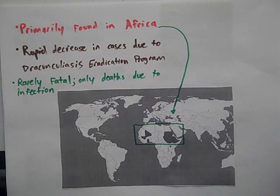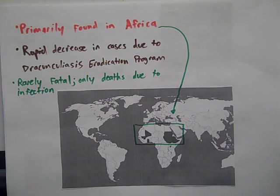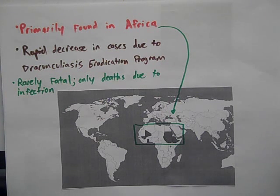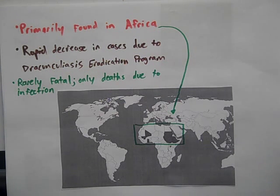The guinea worm is primarily found in Africa. The rapid decrease in cases is due to the Dracunculiasis eradication program. The guinea worm is rarely fatal; the only deaths reported are due to mistreatment of the infected areas or internal infections due to the worm.